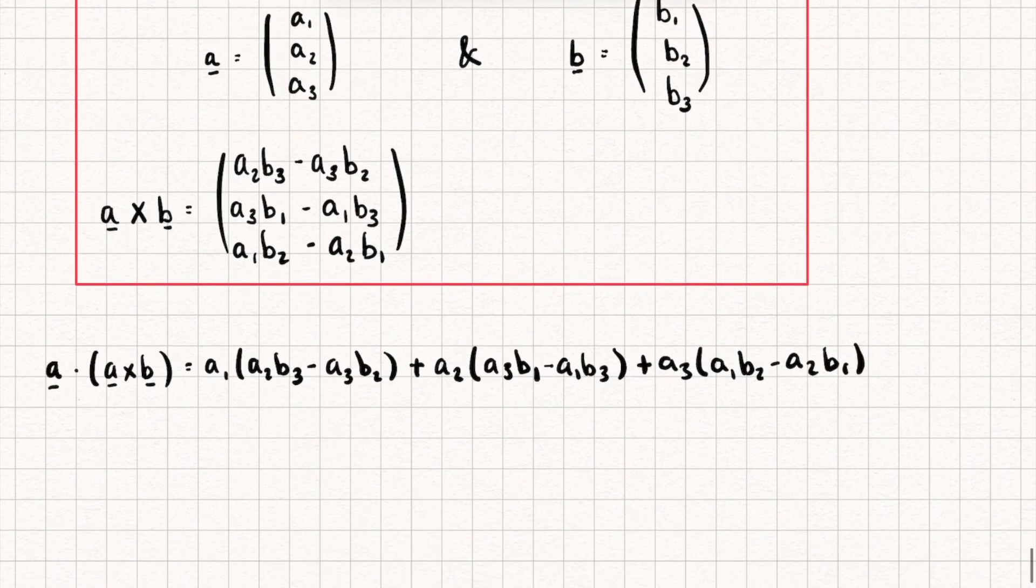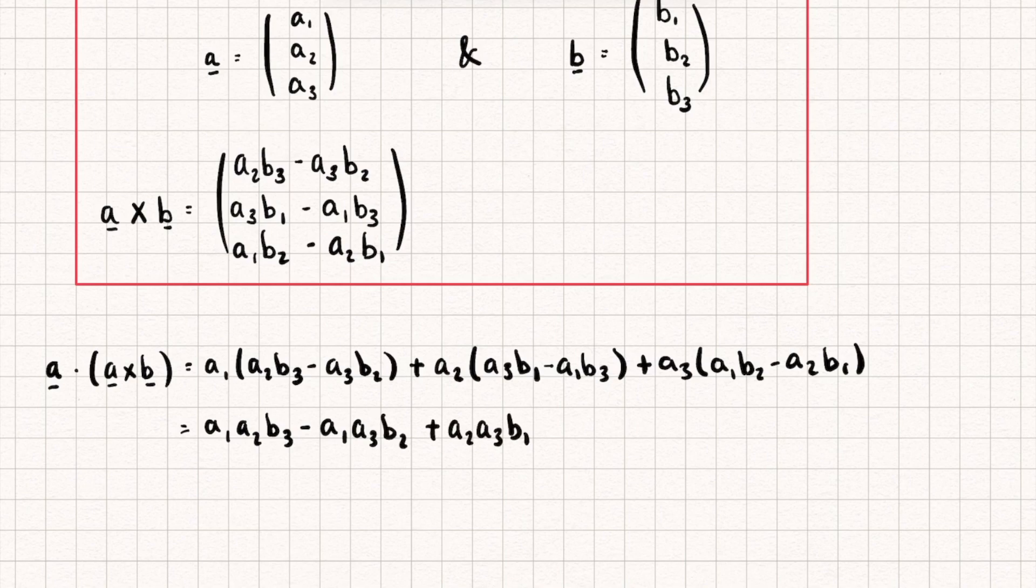I'm now going to expand this and I'm going to write it in order. So I'm going to write it as a1a2b3 minus a1a3b2 plus a2a3b1 minus a1a2b3 just so it's easier to spot similar terms you'll see in a second, plus a1a3b2 minus a2a3b1.